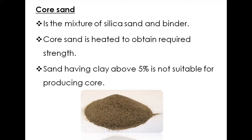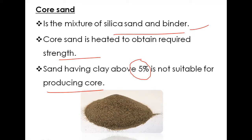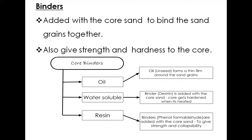Core sand is a mixture of silica sand and a binder. To improve the strength, the core sand is heated to obtain the desired strength. The clay content must be less than five percent — only then is it suitable. More than five percent clay is not suitable for producing a core, because to collapse the core easily at the end of the process, it cannot withstand beyond that limit.